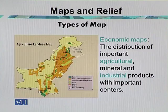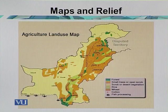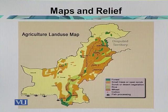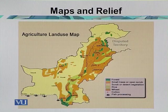Some maps are made for economic purposes — these are called economic maps. They show the distribution of important agricultural, mineral, and industrial products with key centers. In the example of Pakistan, the map shows agricultural land use areas. Most of the area in yellow is under desert vegetation and shrubs. The area in brown shows the most agricultural land, called the Indus plain. The upper part is Punjab province and the lower part is Sindh province.